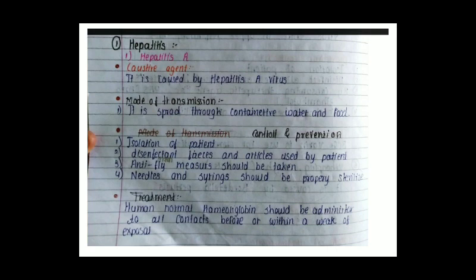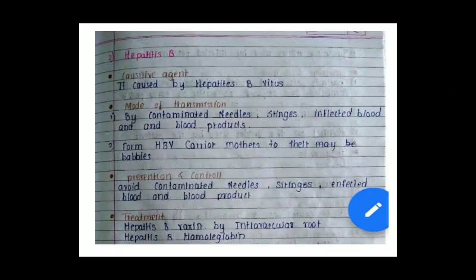Prevention and control: first, isolation of the patient — the patient should be totally isolated. Second, disinfect all articles and objects used by the patient. Third, anti-fly measures should be taken. Fourth, needles and syringes should be properly sterilized. Treatment: human normal immunoglobulin should be administered to all contacts within a week of exposure.